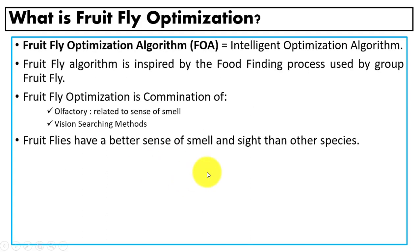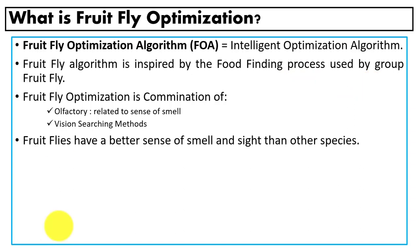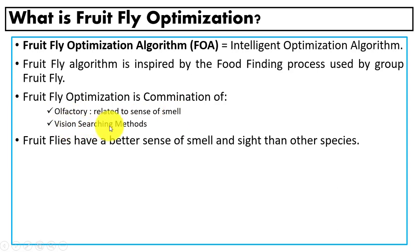The Fruit Fly Optimization algorithm is an intelligent optimization algorithm inspired by the food-finding process used by a group of fruit flies. Fruit flies have a better sense of smell and vision compared to other species — they have 21 olfactory organs related to smell, and they have special vision for searching.